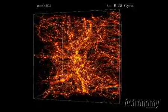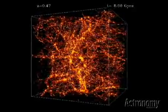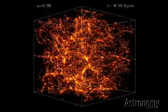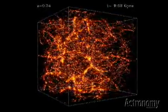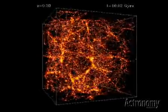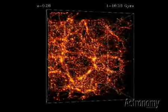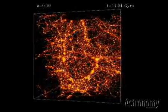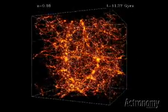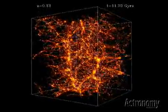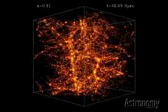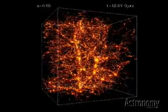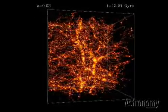Astronomers simulate structure evolution with cold dark matter and create models that resemble today's universe. This simulation shows dark matter distribution, where brighter areas represent more dense regions.